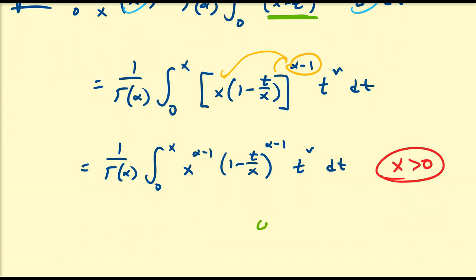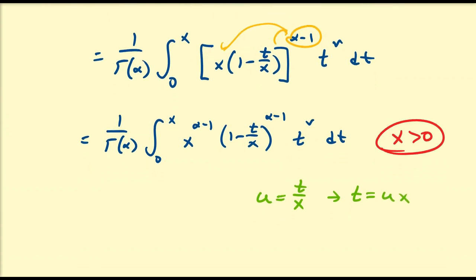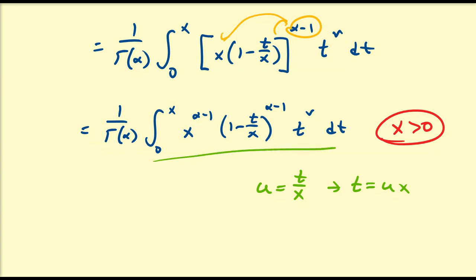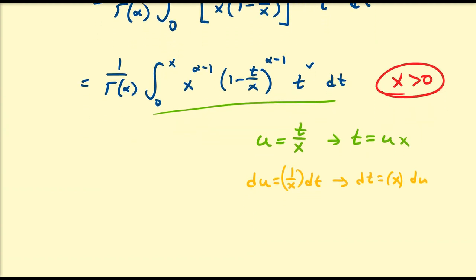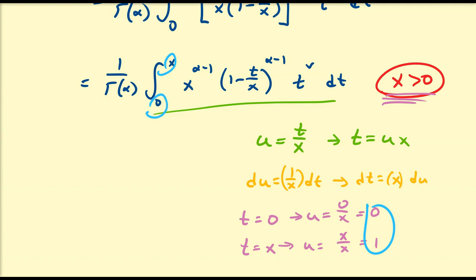We perform a u-substitution: let u = t/x, which means t = ux. We treat x as a constant with respect to this integral. The differential becomes du = (1/x)dt, or equivalently dt = x du. When t = 0, u = 0/x = 0, provided x is positive. When t = x, u = x/x = 1, again assuming x is positive. So the bounds 0 to x transform to 0 to 1, and dt transforms to x du.